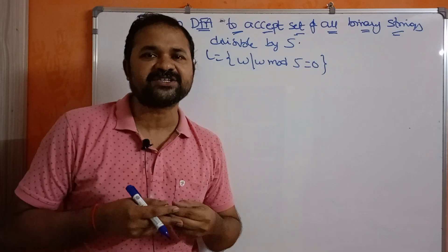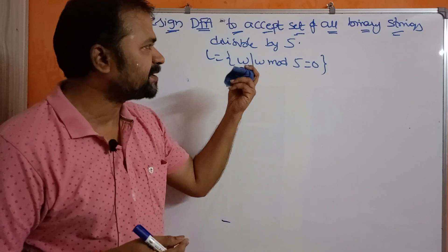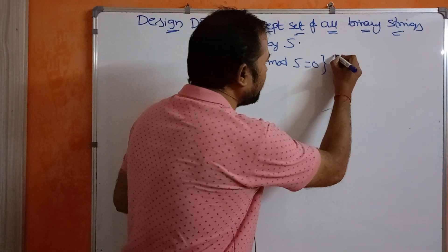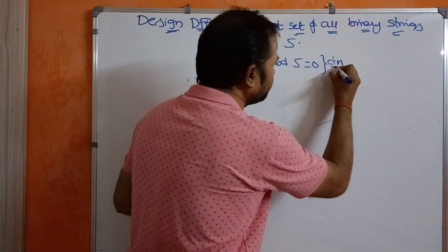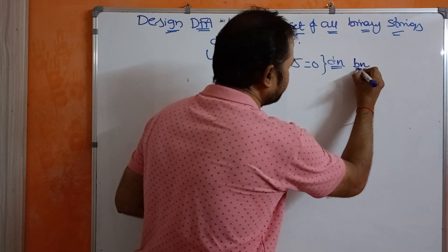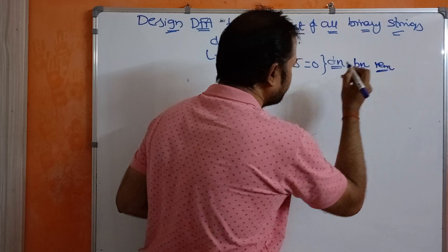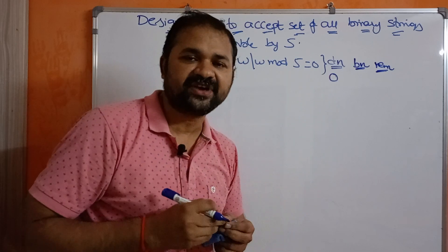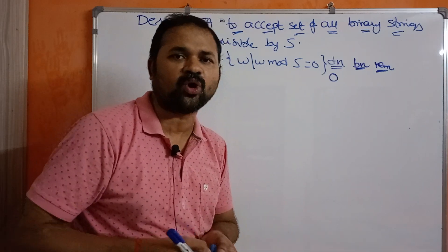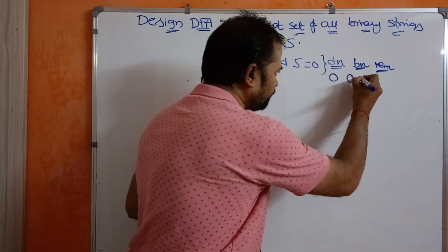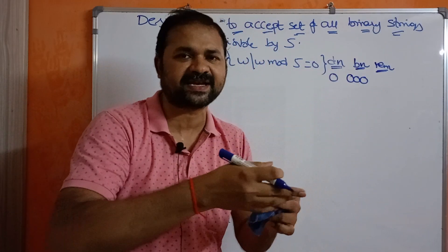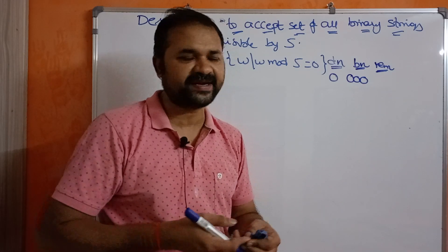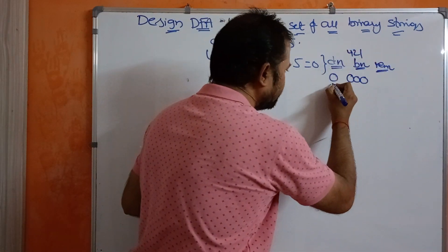We know a binary string is a combination of zeros and ones. First, let us represent the numbers from 0 to 10 in binary notation. We have three columns: decimal number, binary number, and remainder. For 0, we can use single, double, or triple zero. Here I am using a 4-bit representation using the four-two-one notation to represent numbers like four, five, six, and seven.